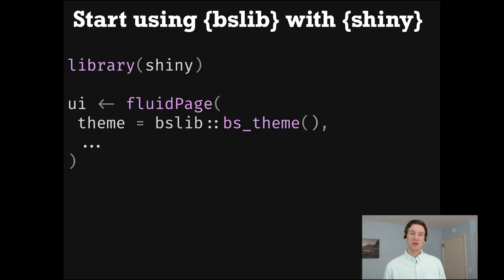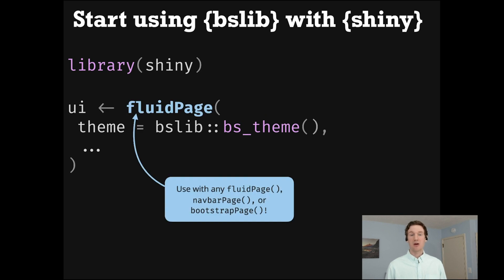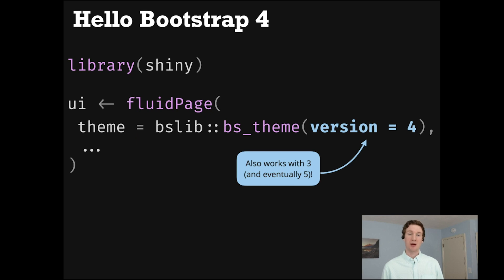So to start using bslib with Shiny, the first thing you're going to want to do is call this bs_theme function to create a theming object, which you can then give to the theme argument of essentially any page layout inside of Shiny that wants to utilize Bootstrap. Now at least currently, by default, what this is going to do is actually upgrade your application from using Bootstrap 3 to using Bootstrap 4.